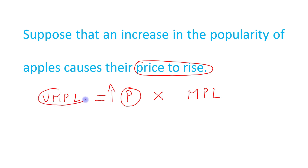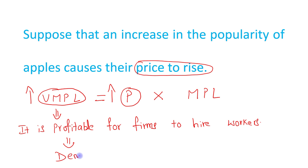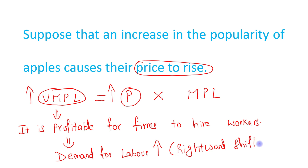This will lead to an increase in the value of marginal product of labor. When the value of marginal product of labor is increased, it is profitable for firms to hire workers. If VMPL is increased, it is profitable for firms to hire workers, which means demand for labor will be increased.